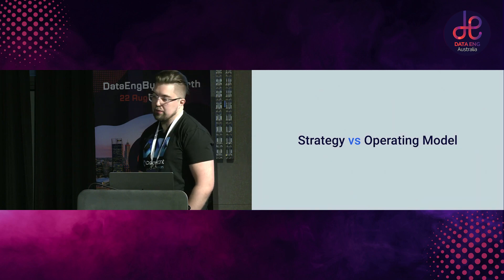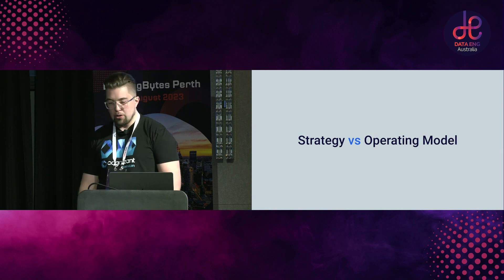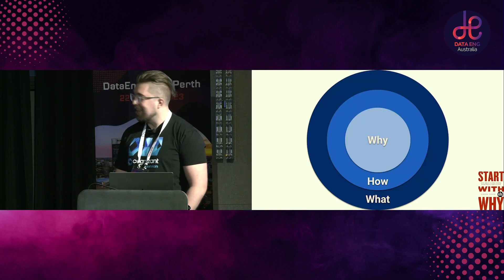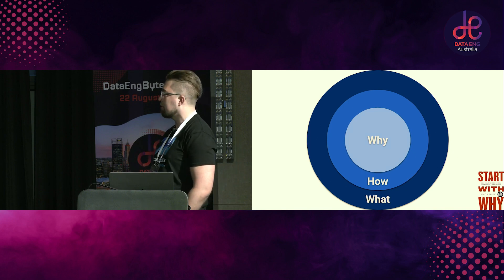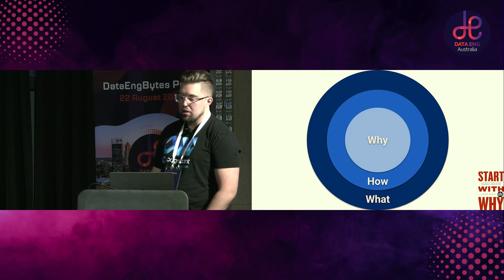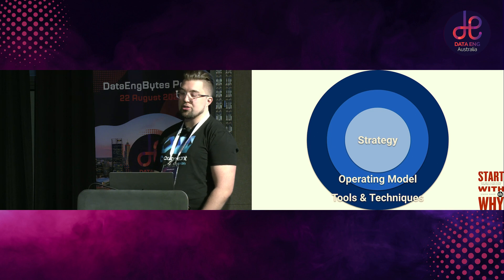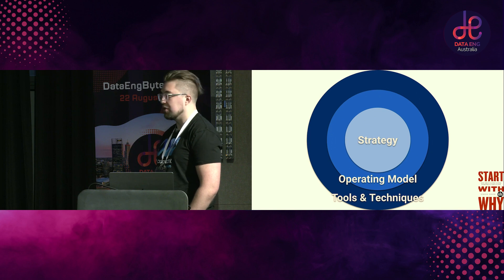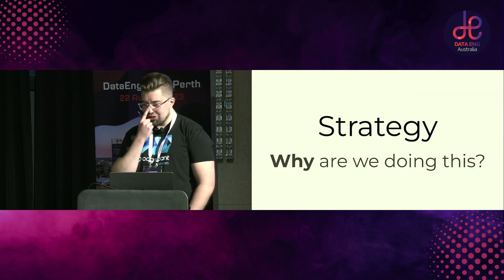Strategy and operating models — the difference between them and why it matters. I really like Simon Sinek's Start With Why model: concentric circles of why we're doing something, how we're going to do it, and what we're going to do. I overlay strategy, operating model, and tools and techniques over that. Strategy is your central 'why', your operating model is 'how', and your tools and techniques are what you're going to do on a day-to-day basis.